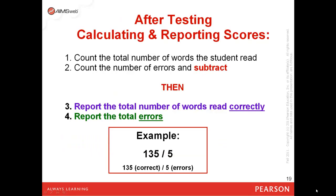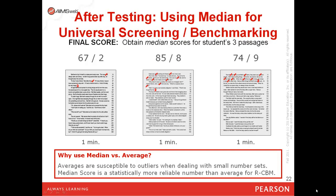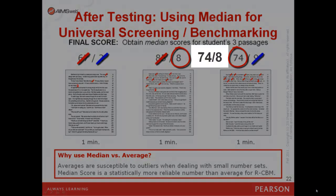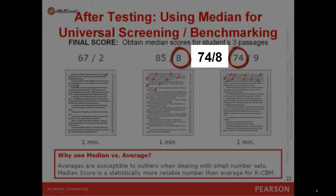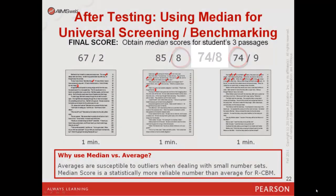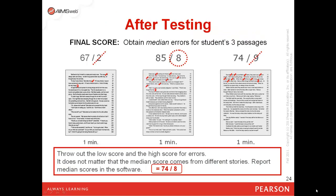After you're finished testing, calculate and report the median score. First, you'll take the total number of words the student read, count the number of errors and subtract, then report the total number of words read correctly and the total number of errors. If you're using our online scoring, this system will calculate this for you automatically. The median is simply throwing out the high and the low scores for the corrects, and the high and the low scores of the errors of the three passages you administered, and recording that middle score. Medians, when we're only using data sets of three, are more statistically reliable than an average. So you'll never need to average AIMSweb scores — there's no need for a calculator.